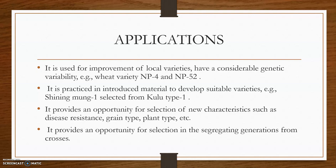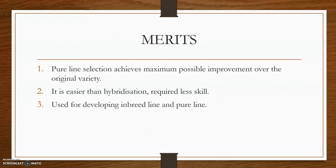An example is Shining Monk One, selected from the Kulu type. The method also provides an opportunity for selection of new characteristics such as disease resistance and plant type, and provides opportunity for selection in the segregating generation from crosses.